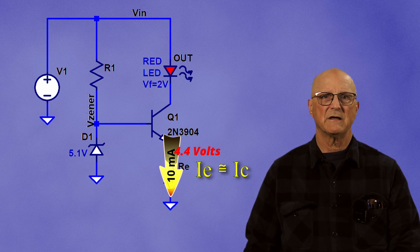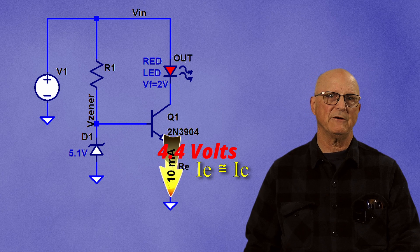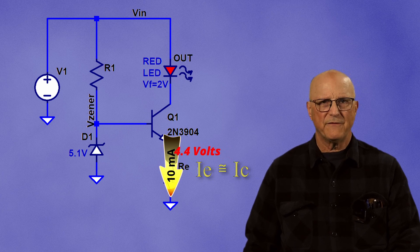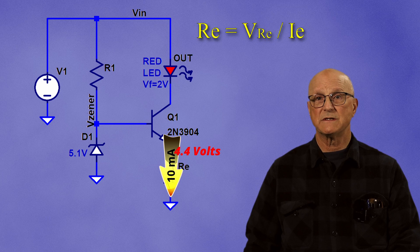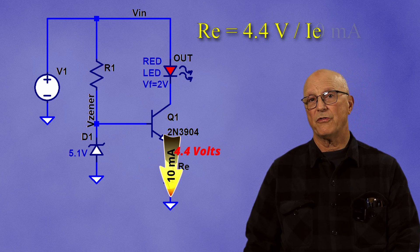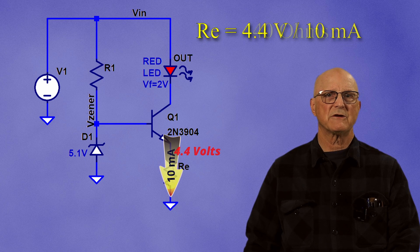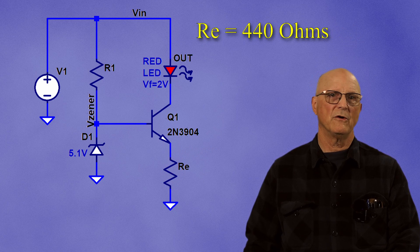The voltage across the emitter resistor is 4.4 volts as we previously calculated. The resistor value is the voltage across the resistor divided by the current through it, and we know the voltage across it is 4.4 volts, and the current through it is 10 milliamps. This gives us a resistor value of 440 ohms.